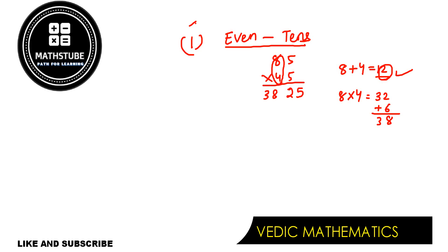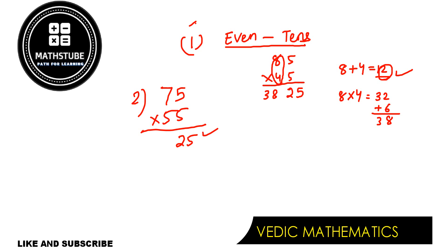Let me take one more example. Suppose it is 75 and 55 — where the sum of the tens digits is even. Last two digits will always be 25. Here 7 plus 5 is 12, so take half: 12 by 2 is 6. Then 7 times 5 is 35. 35 plus 6 is 41. So our answer is 4125.